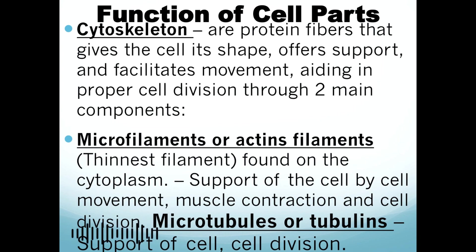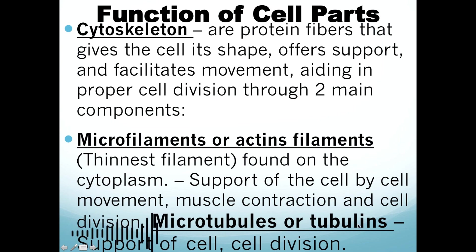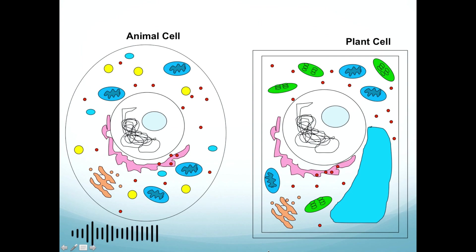The cytoskeleton is made of protein fibers that give the cell its shape, offer support, and facilitate movement, aiding in proper cell division. It serves as protection and gives the cell its form. It has two main components: microfilaments, also called actin filaments, and microtubules, also called tubulin. Both components support the cell, give it shape, and assist in cell division.